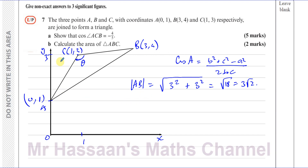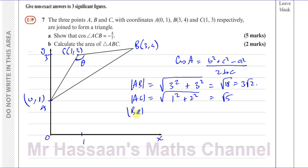Then we find AC: the change in x is 1 minus 0 = 1, and the change in y is 3 minus 1 = 2. So AC = √(1² + 2²) = √5. For BC: the change in x is 3 minus 1 = 2, and the change in y is 4 minus 3 = 1. So BC = √(2² + 1²) = √5 as well. It's an isosceles triangle with AB = 3√2, AC = √5, and BC = √5.